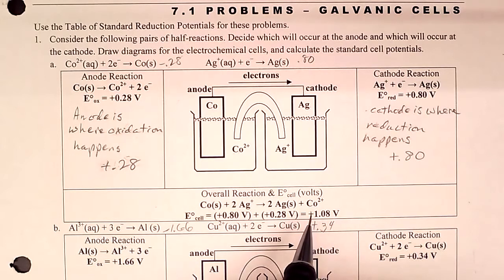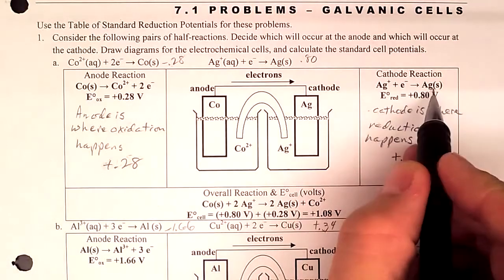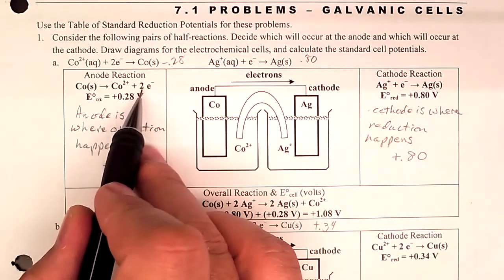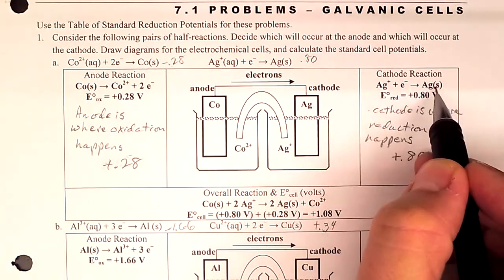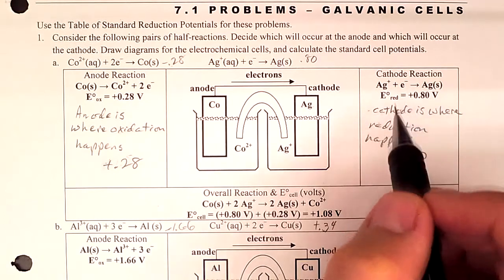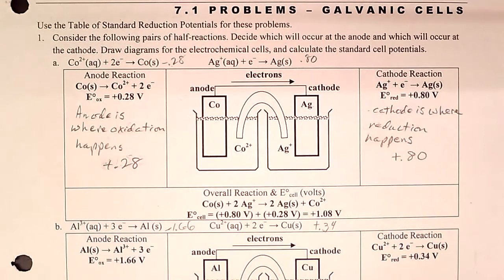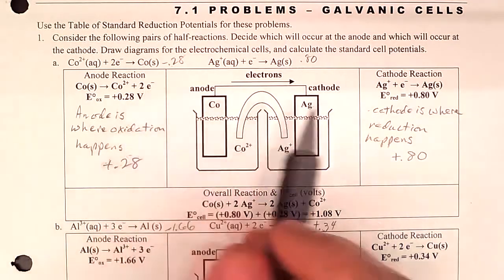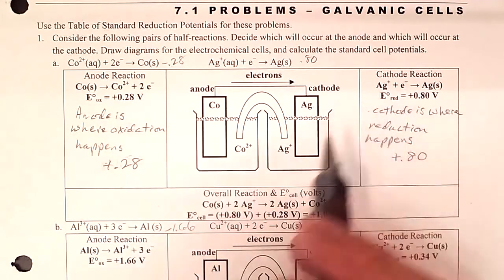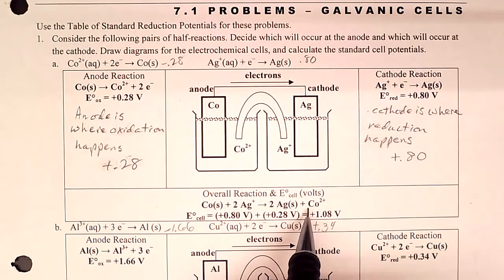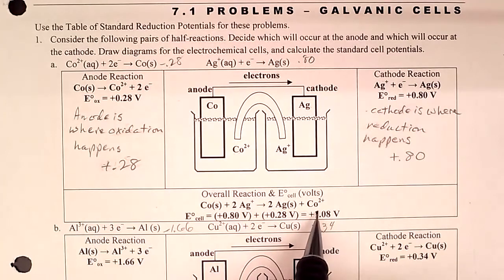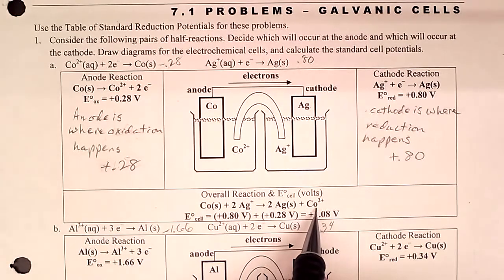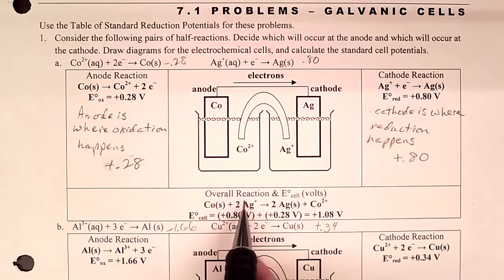For the overall reaction, we have the reduction half-reaction and the oxidation half-reaction. Since you can't give two electrons and only receive one, we multiply the oxidation reaction by two so that the electrons cancel out — two electrons on each side. When we combine the two half-reactions, we get the net ionic reaction. The electrons don't appear in the overall reaction.